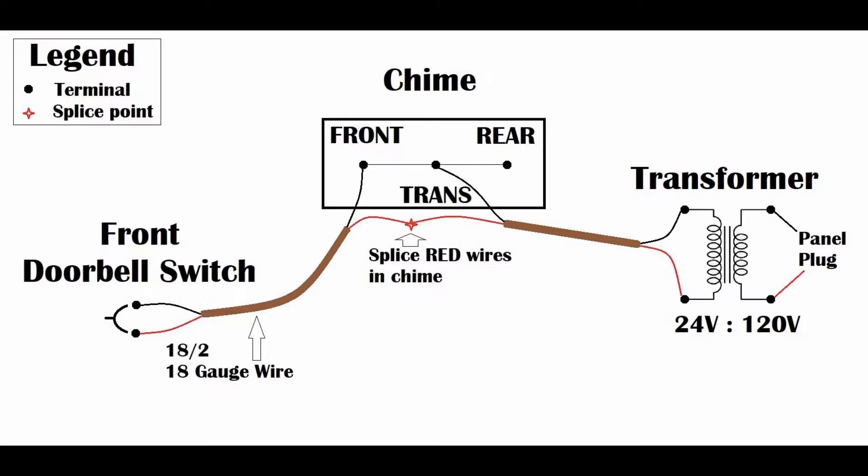Before we begin, hopefully your house is wired correctly during the roughing stage. If not, you will need to install new 18-2 18 gauge wire from the front doorbell to the location of your chime and another set of 18-2 from the chime to the transformer. And the transformer should be near your panel plug.